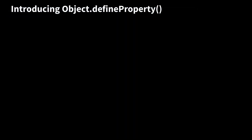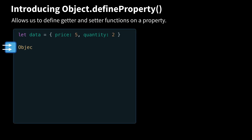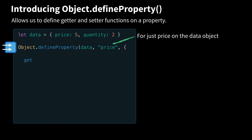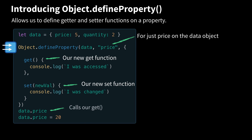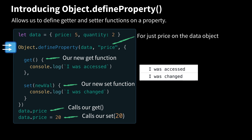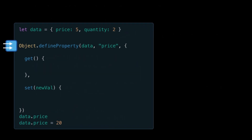This is where Object.defineProperty comes in. This allows us to define getter and setter functions on a property. So here's our object, and now we'll call defineProperty on it — we'll use this icon whenever we call defineProperty. We'll send in the data object, specify our price property, and inside we'll declare a new get function. For now we'll just log out 'I was accessed' to the console. We'll define a new set function and just log out 'I was changed' to the console. Now when we call data.price, it calls our get. When we call data.price equals 20, this calls our set function. If we ran this code, we would see 'I was accessed', 'I was changed.' You might notice this doesn't actually get or set actual values — since we're overriding the get and set functions, we need to actually implement this functionality.